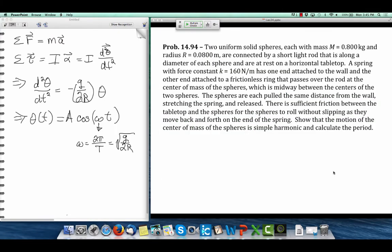The reason I point that out is there's probably the most complicated problem on the homework in the oscillation chapter is two uniform solid spheres connected by a short light rod that's along the diameter. Two uniform solid spheres connected by a short rod in between them that doesn't weigh very much. They rest on a horizontal tabletop.